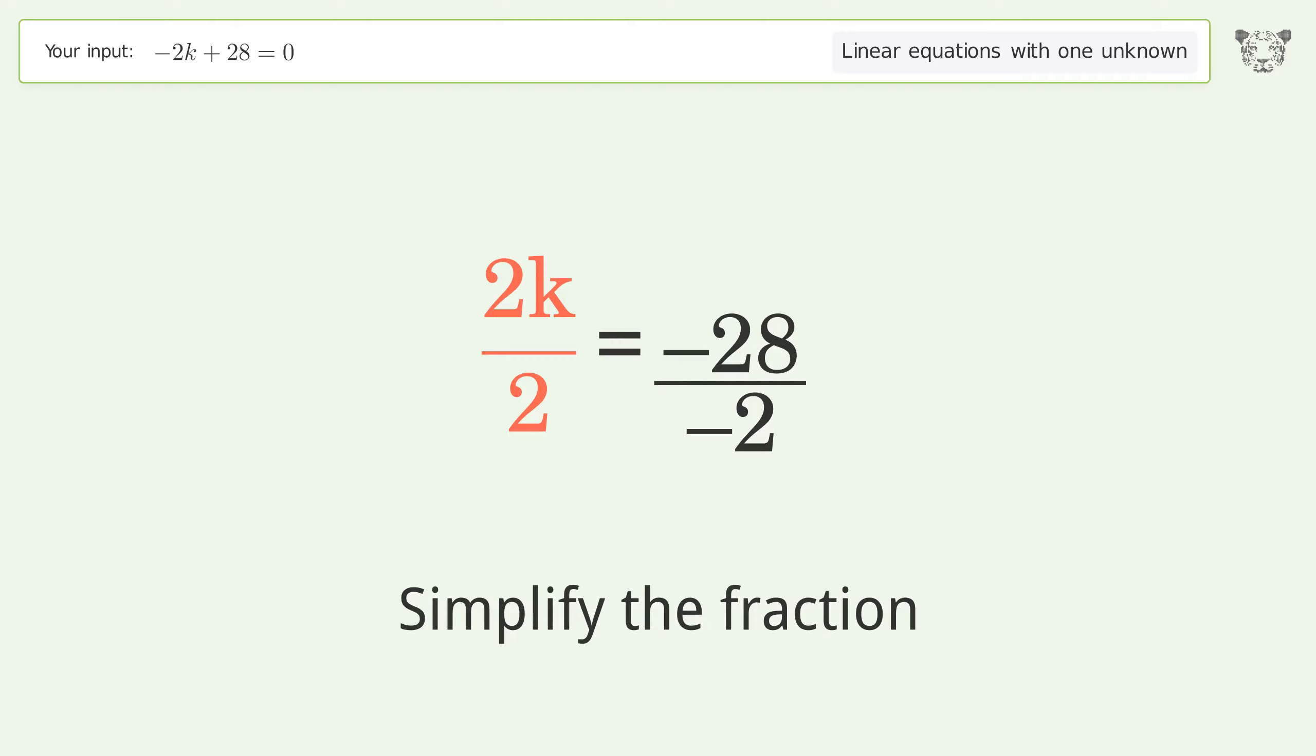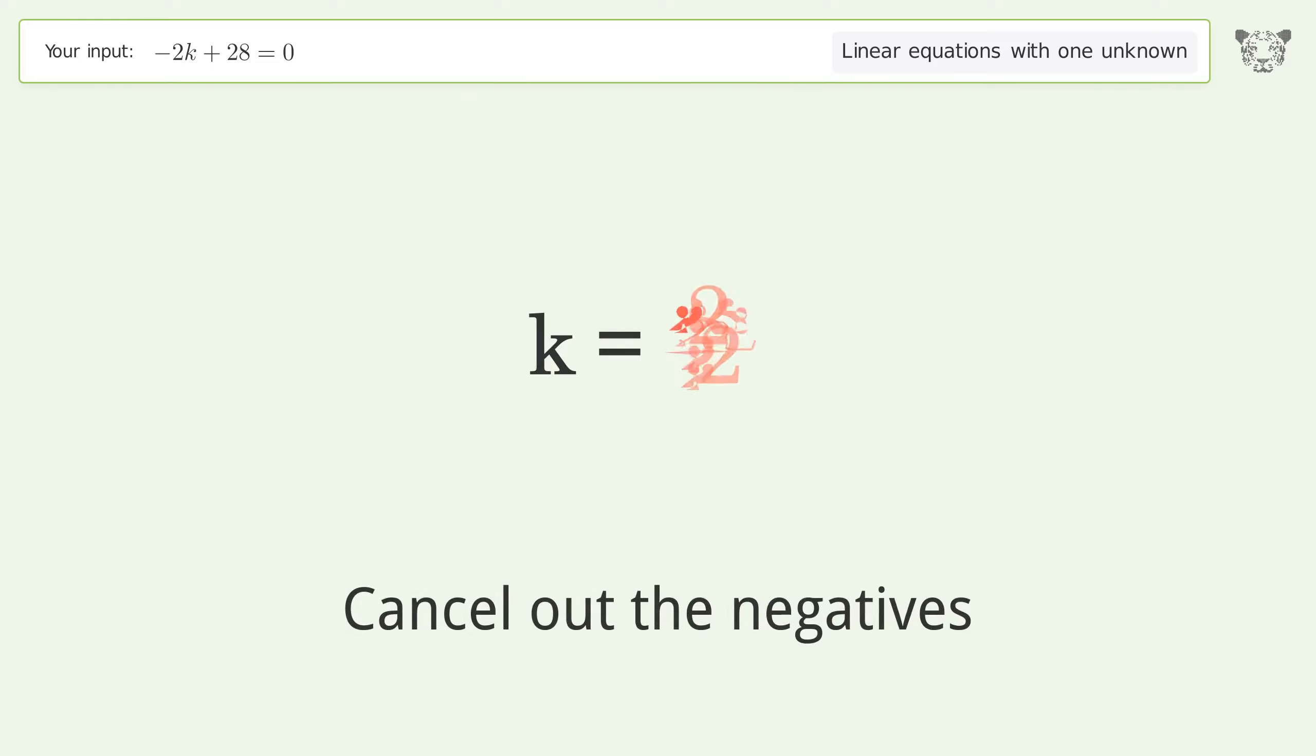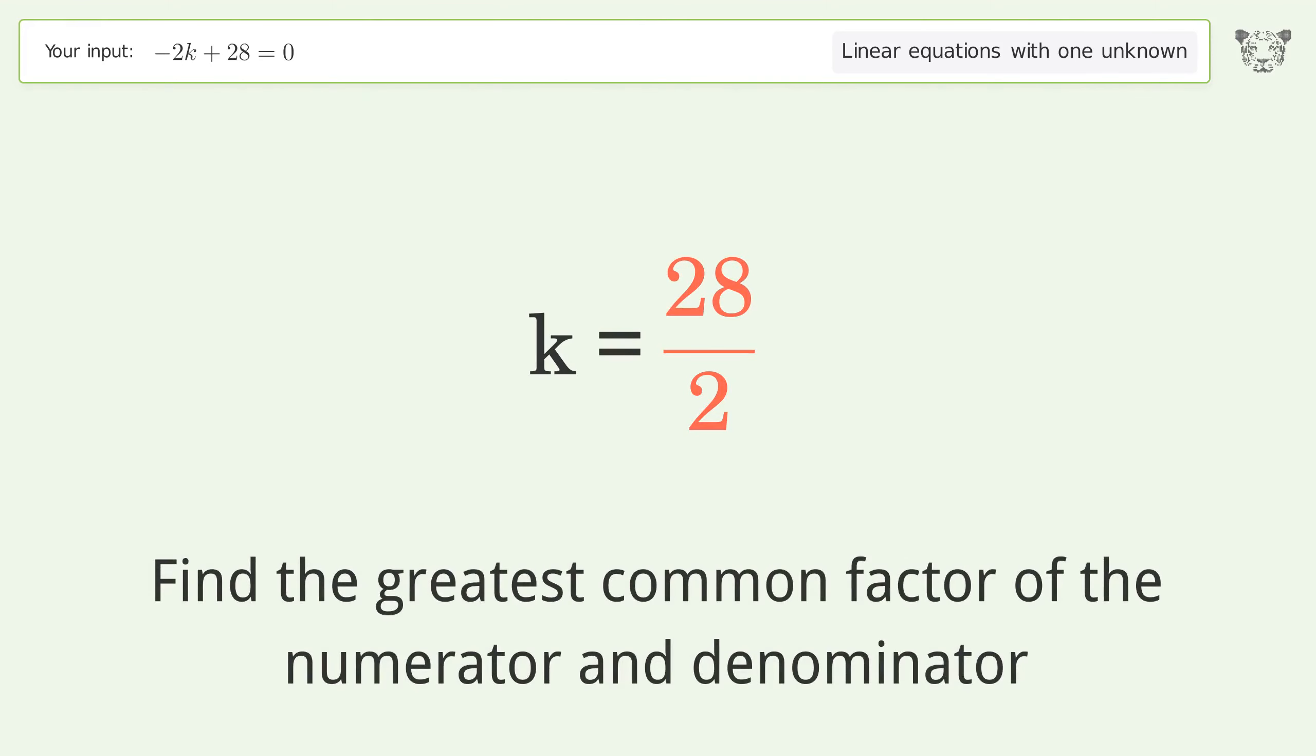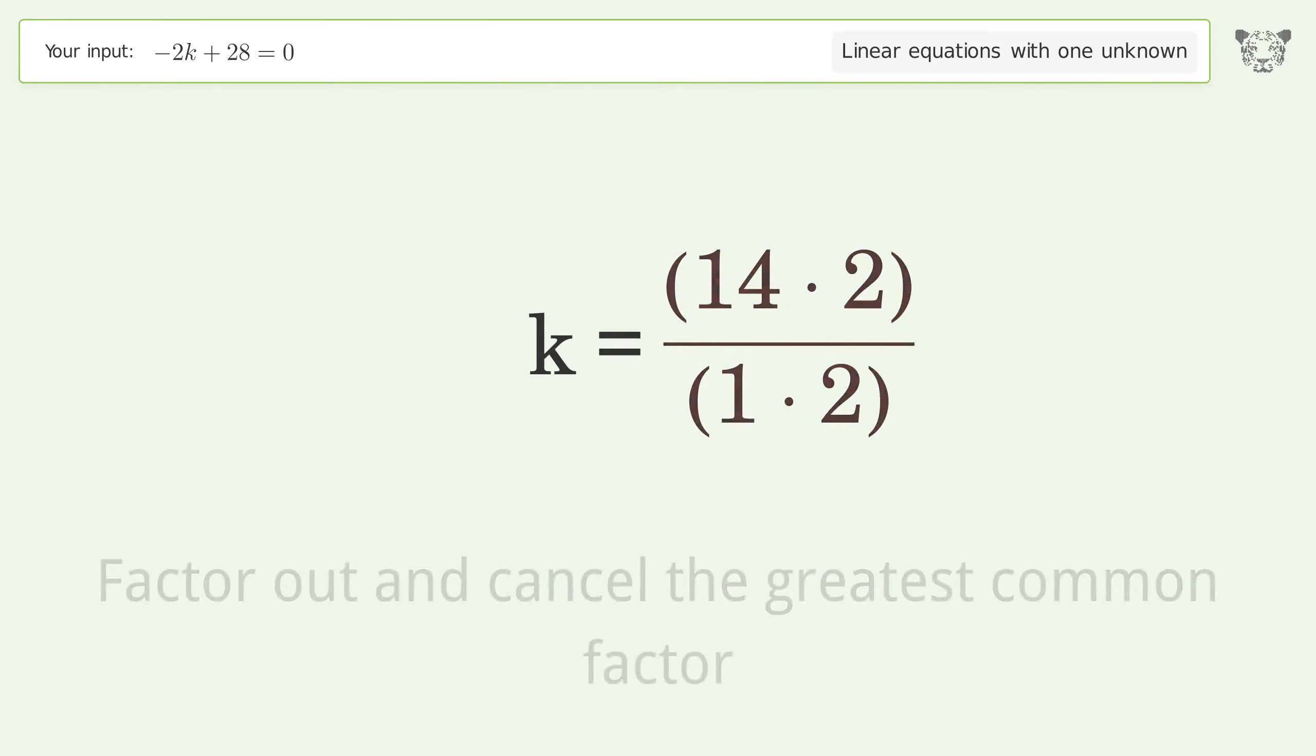Simplify the fraction. Cancel out the negatives. Find the greatest common factor of the numerator and denominator. Factor out and cancel the greatest common factor.